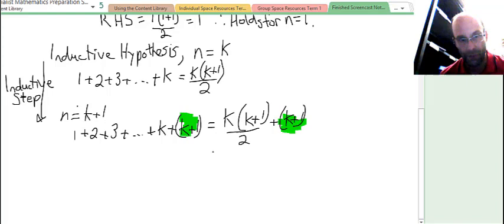Now let's simplify the right hand side only, so we're simplifying this right hand side. Developing the right hand side. Let's have a look at what we have. We can expand if we like. So we have k squared plus k over 2.